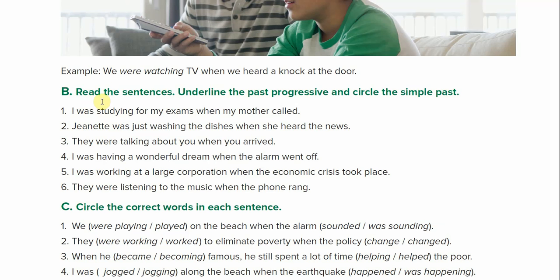We're going to work on identifying which is past progressive and which is simple past. In the first one: I was studying for my exams when my mother called. We know past progressive is going to have was or were with a verb ending in -ing. So, was studying is past progressive, and called is simple past — this was continuing when this one happened.